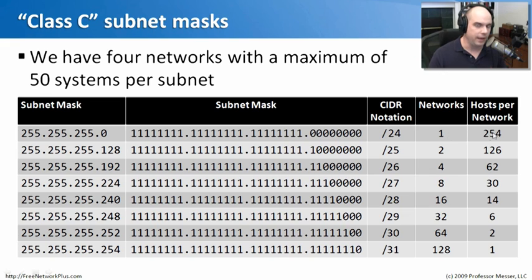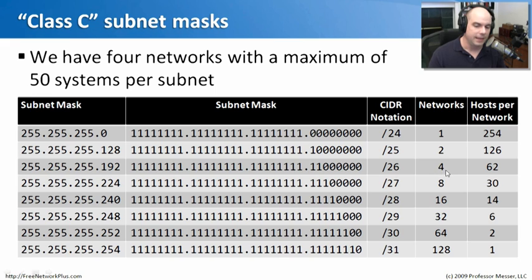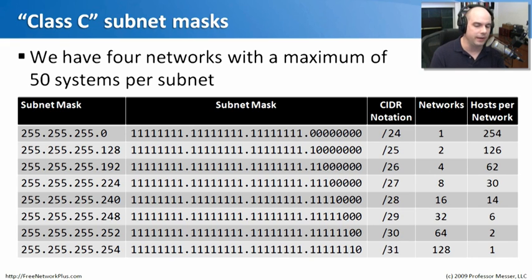That means we can have one network and 254 hosts on that network. On our scenario, we need at least four networks. Looking through the list, there is a subnet mask of 255.255.255.192 — that's CIDR block notation slash 26, exactly the same thing. That allows us to have four networks, but we can only have 62 hosts on each network. There's a trade-off: when you steal bits from one side, you give bits to the other side.